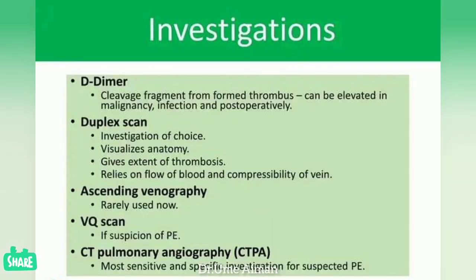Investigations include: D-dimer, which is a cleavage fragment from a formed thrombus that can be elevated in malignancy, infection, and post-operatively. Duplex scan is the investigation of choice, visualizing anatomy, extent of thrombosis, and compressibility of the vein. Ascending venography is rarely used now. VQ scan is used if pulmonary embolism is suspected. CT pulmonary angiography is the most sensitive and specific investigation for suspected pulmonary embolism.